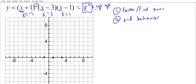Since the leading term is x to the fourth — even degree and positive — the end behavior is up/up. On the rightmost point it goes up and to the right; on the leftmost point it goes up and to the left. As x goes to positive or negative infinity, y is increasing. Next, we want to look at multiplicity.